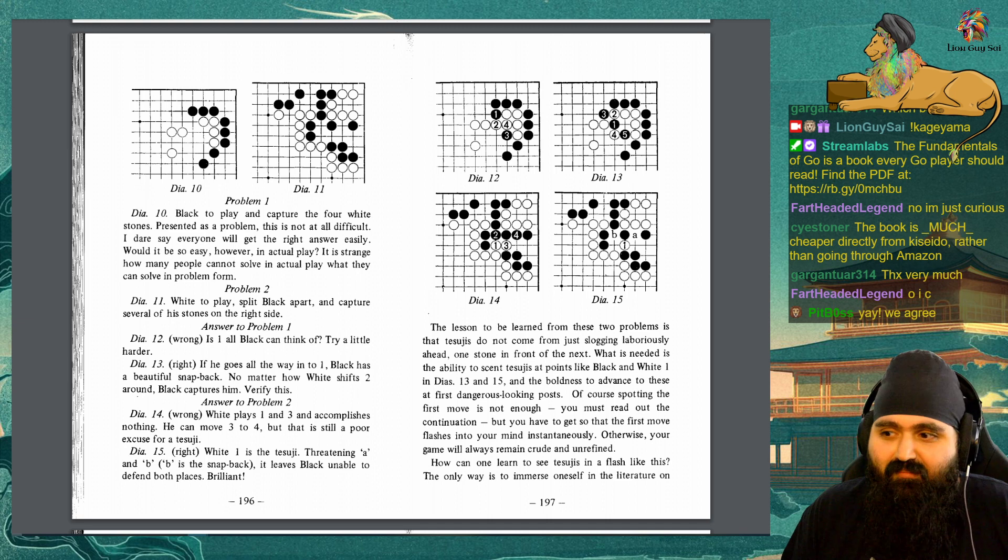Answer to problem 1, Diagram 12: Wrong. Is 1 all black can think of? Try a little harder. Diagram 13: Right. If he goes all the way in to 1, black has a beautiful snapback. No matter how white shifts 2 around, black can capture him. Verify this.